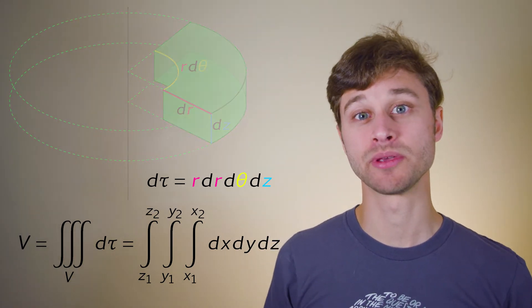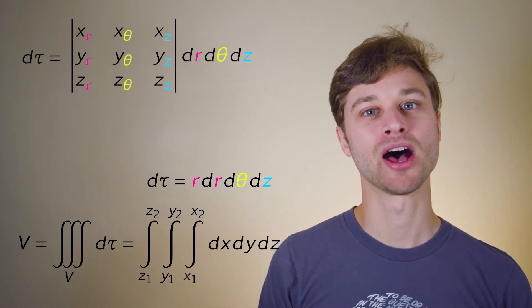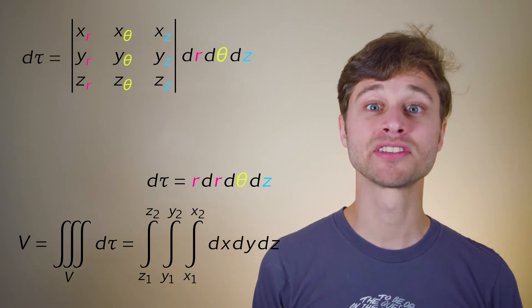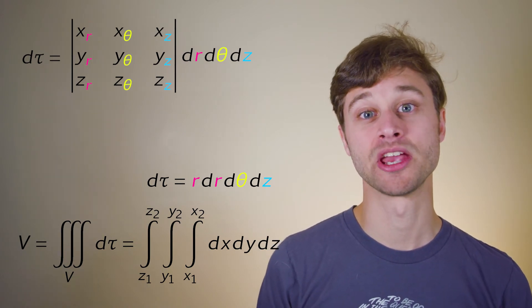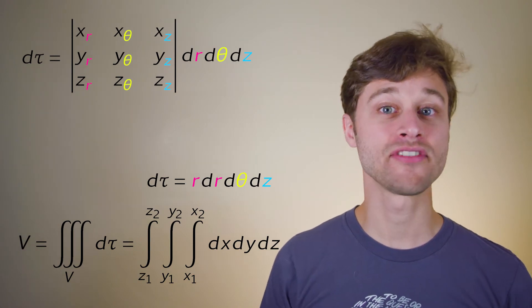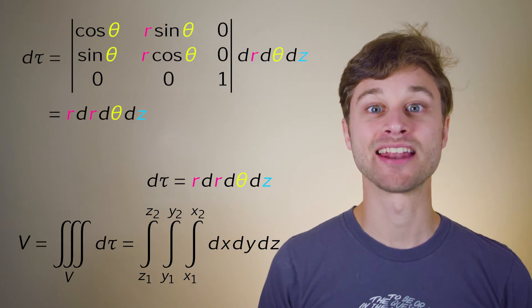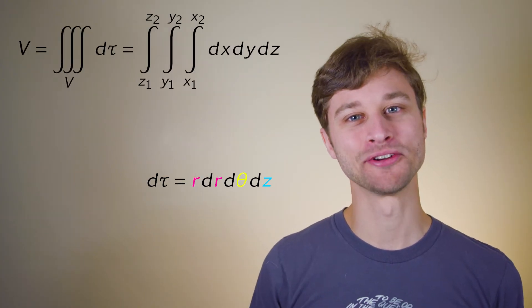If you want to know how to do this using the Jacobean, I'll leave that up to you. All you need to do is solve for the determinant of this matrix made up of partial derivatives. Those partial derivatives come from the functions that are the transformations between Cartesian and cylindrical coordinates. You should arrive at this matrix, and solving for that determinant, you should arrive at the answer. But I digress. Back to our triple integral.